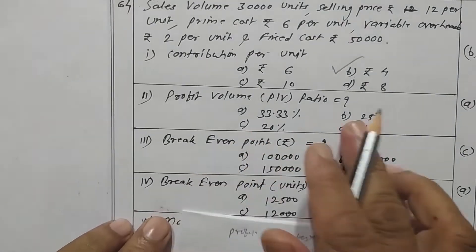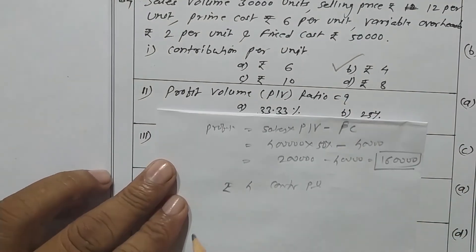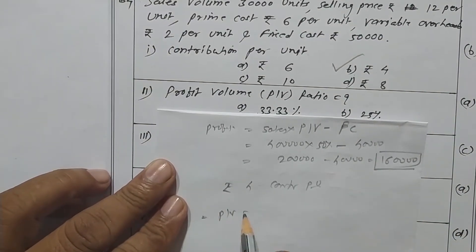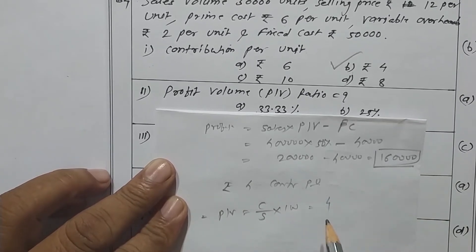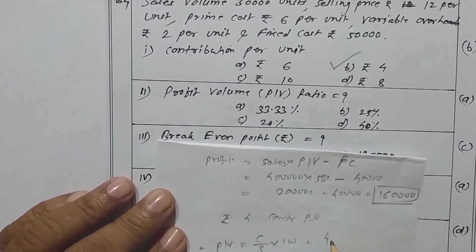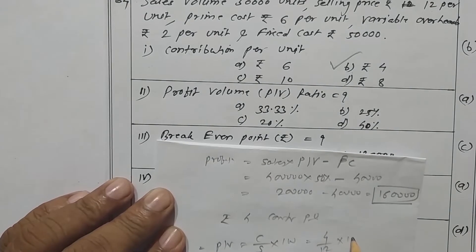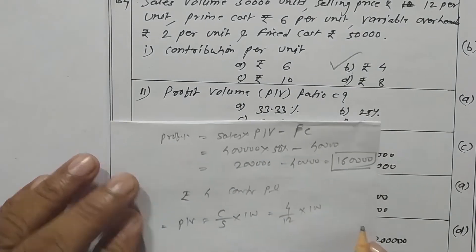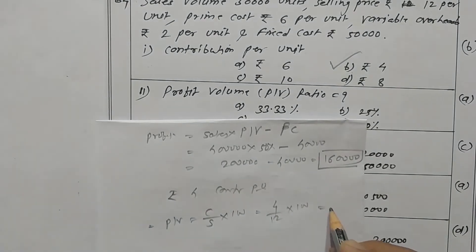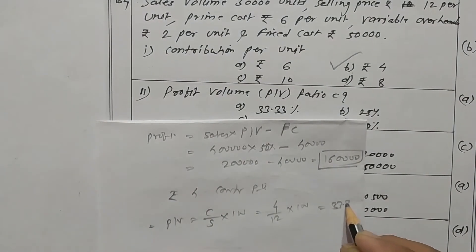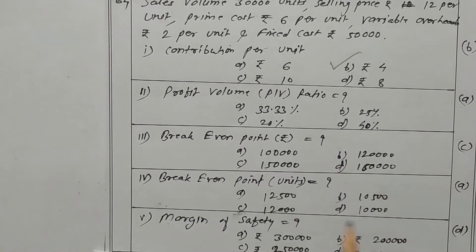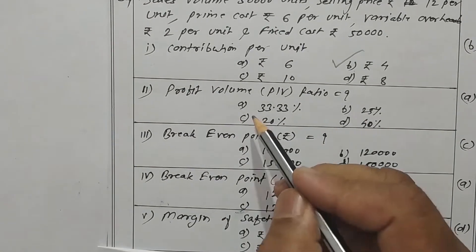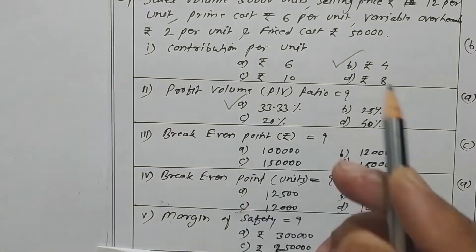Now what is the PV ratio? The formula is contribution upon sales into 100. Contribution is 4 and selling price is 12, so 4 upon 12 into 100 gives 33.33 percent. Option A is the correct one.